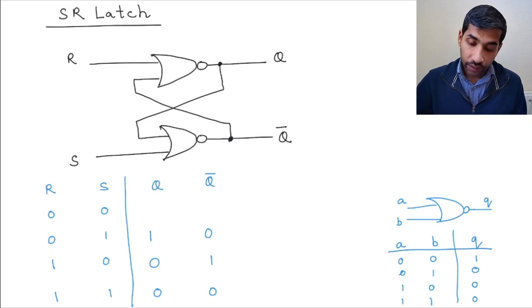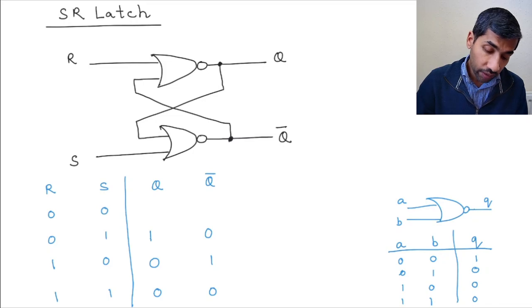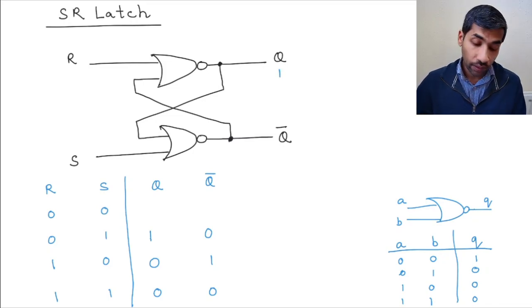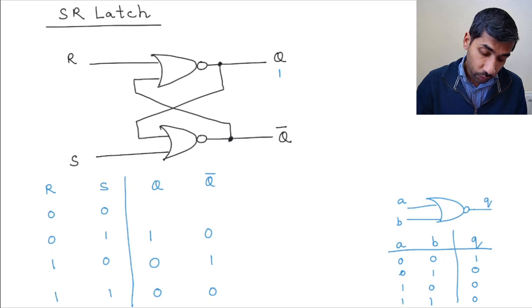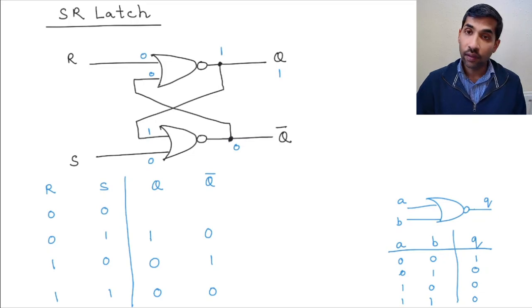Now, think about this. If R and S both are 0 and Q is 1 by some chance, then Q is 1, so you get 1 here, you get 0 here. So what is the output of this NOR gate then? It is 0. And then if this is 0, the input here is going to be 0, and R is already 0. So what will be Q? It's going to be 1. So if Q is 1, it remains 1. Does that make sense? So if you make R and S equal to 0, Q remains 1.